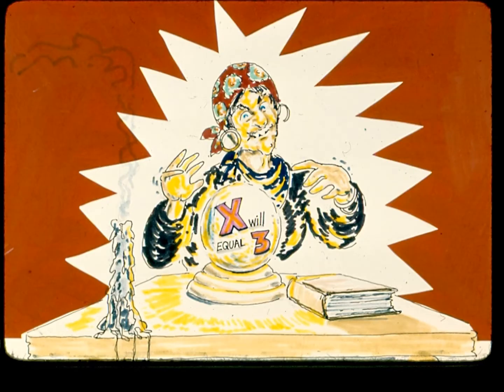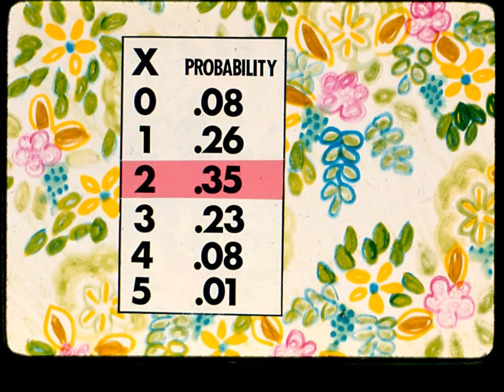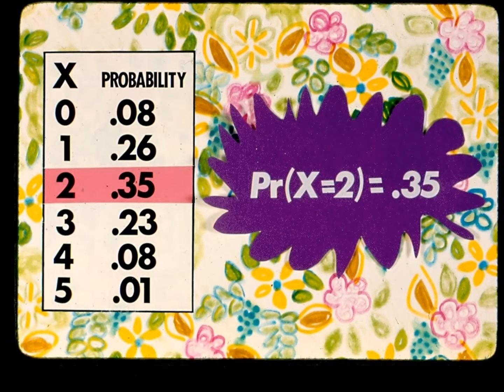We cannot predict for certain that x will take on a specific value like 3. However, when we know all the properties of the variable, we can pin down the likelihood of each value occurring as in this distribution table. We can then say that x equal 2 is the most likely value at 35%, while x equal 1 occurs 26% of the time and x equal 3 occurs almost as often.